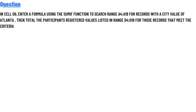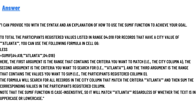Enter a formula using the SUMIF function to search a range for records with the city value of Atlanta, and total the participant registrations values listed in range D4:D18 for those records that meet the criteria. The correct answer uses the SUMIF function syntax to achieve this goal.